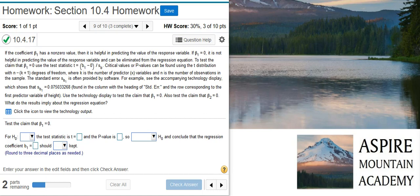Here's our problem statement. If the coefficient beta1 has a non-zero value, then it is helpful in predicting the value of the response variable. If beta1 is equal to zero, it is not helpful in predicting the value of the response variable and can be eliminated from the regression equation. To test the claim that beta1 equals zero, use the test statistic t equals beta1 minus zero divided by s sub b. Critical values or p values can be found using the t distribution with n minus k plus one degrees of freedom, where k is the number of predictor variables and n is the number of observations in the sample.